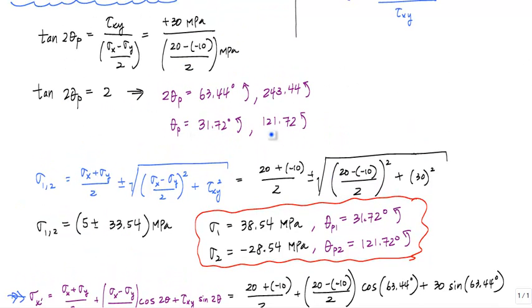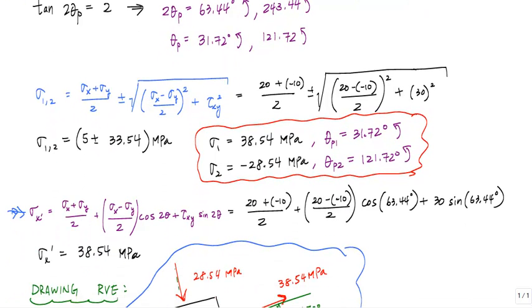The two angles that are associated with the principal stresses. Then go to this equation right here, plug in 31.72 degrees, get one principal stress, and then plug in 121.72 degrees. And in order to plug in 121.72 degrees, you probably just scroll up in your calculator, replace values.